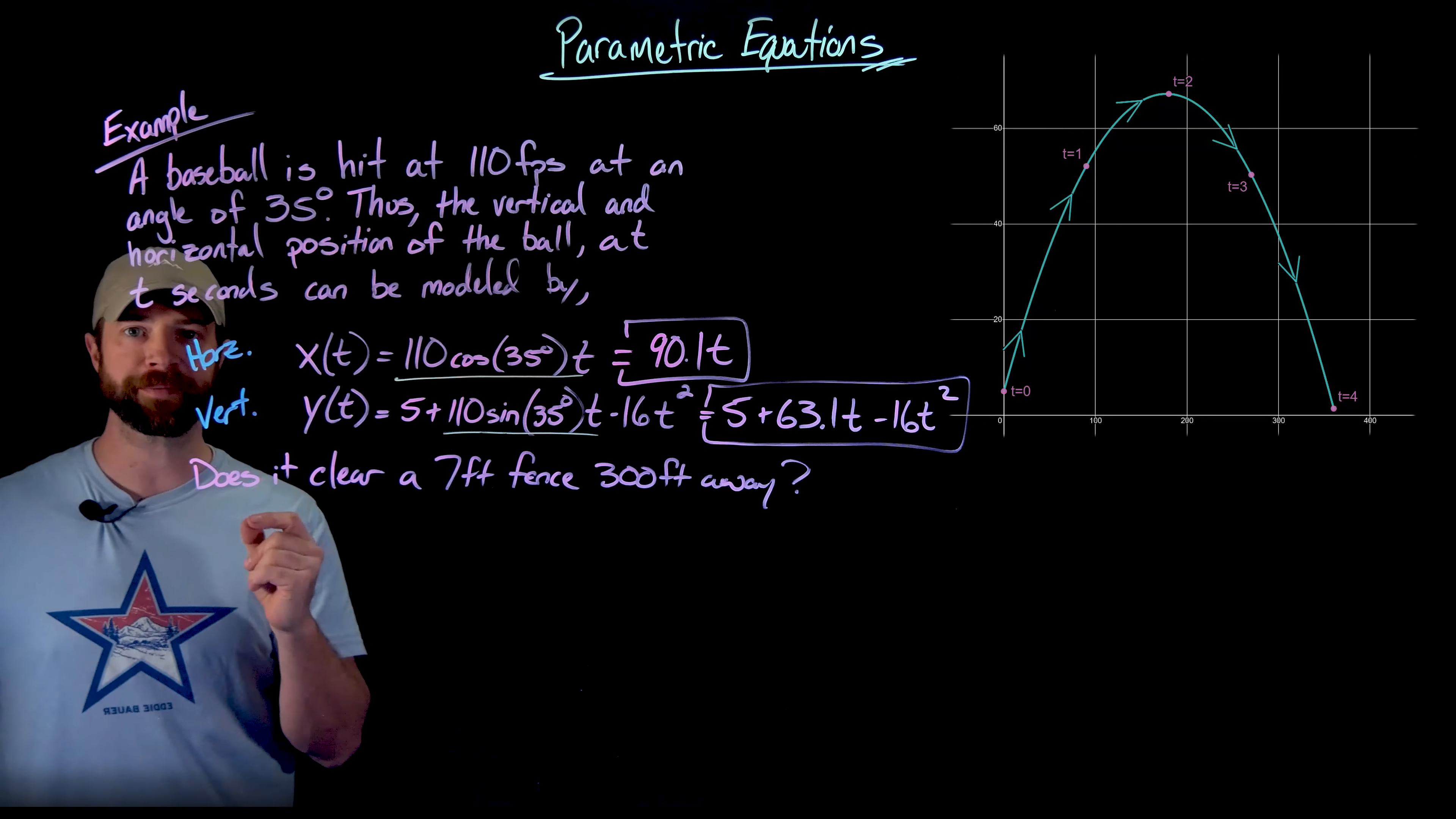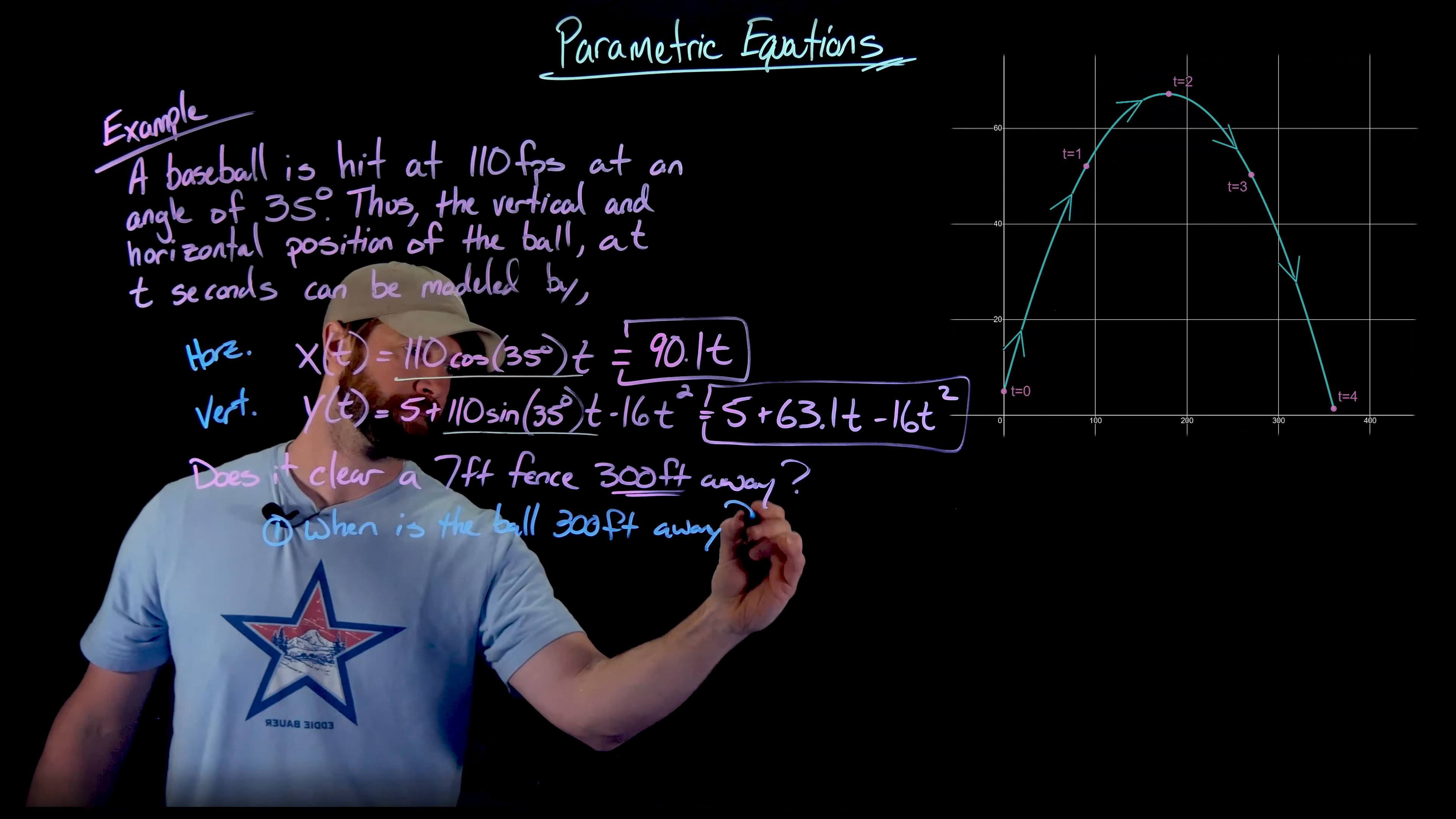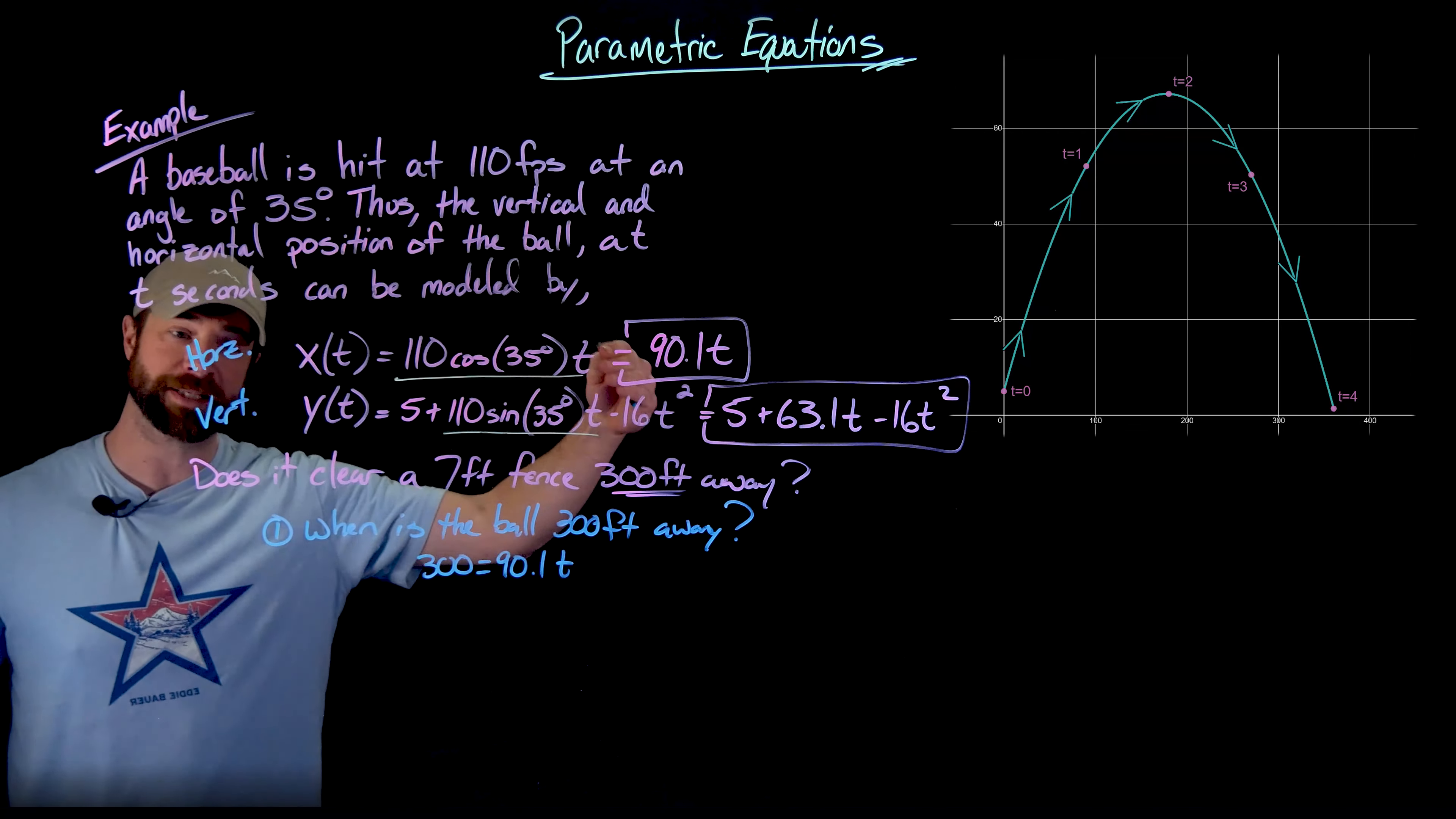Again, I have two separate functions, one describing the horizontal position and one the vertical position. What I'm going to do is use this information right here so I know the fence is 300 feet away. What I'm going to do then is find out when is the ball 300 feet away? And I can answer this by setting this X equation equal to 300. What I'm going to do, so I'm going to set this 300 equals 90.1T. So what I've set is the horizontal distance equal to 300.